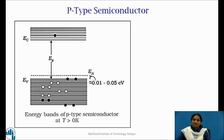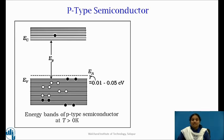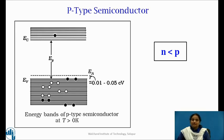The energy band diagram of p-type semiconductor can be seen in the figure. The acceptor level represents the ground level of the hole. As even a small amount of thermal energy can make an electron in the valence band jump into the acceptor level, the acceptor levels are expected to be located very near to the top edge of the valence band. A hole is said to have moved from the acceptor atom to the valence band. Therefore, in p-type semiconductor, holes are the majority charge carriers and electrons are the minority charge carriers.